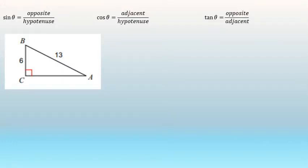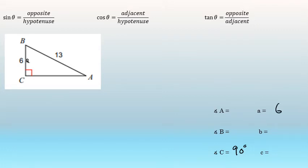To solve this triangle, we'll identify the measures of all of the angles and the lengths of all of the sides. In this problem, we were given that angle C is 90 degrees — that's the right angle. Side A, the side across from angle A, is exactly 6, and side C is 13. We'll begin by finding the length of side B. The length of side B does not require trigonometry — this is a right triangle and we know two of the sides exactly, so we can use the Pythagorean theorem to find that third side.